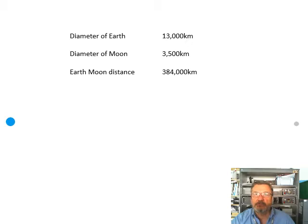384,000 kilometers. Looking at this, the blue thing represents the Earth, this little gray thing represents the Moon, and to scale, that is how far away the Moon is.